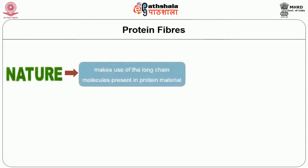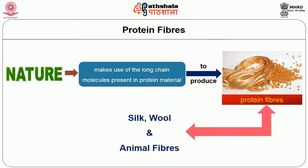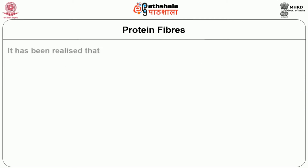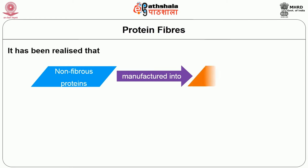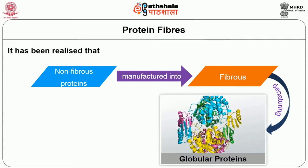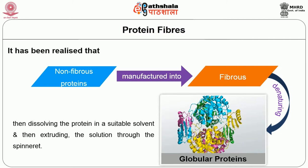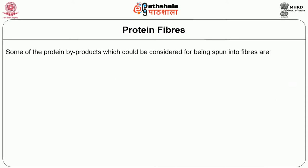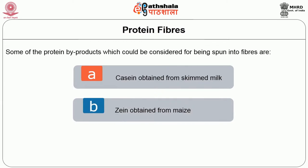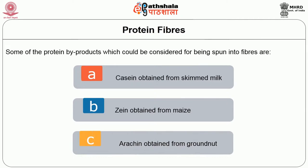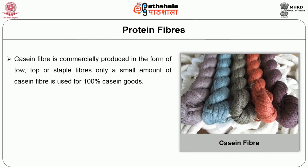Protein fiber. Nature makes use of long chain molecules present in protein materials to produce protein fibers such as silk fiber, wool fiber and other animal fibers. It has long been realized that non-fibrous proteins could be manufactured into fibrous form by denaturing the globular proteins, then dissolving the protein in a suitable solvent and extruding the solution through the spinneret. Some of the protein by-products which could be spun into fibers are casein obtained from skim milk, zein obtained from maize and archin obtained from groundnuts. Of the above sources, only casein fiber is commercially produced.